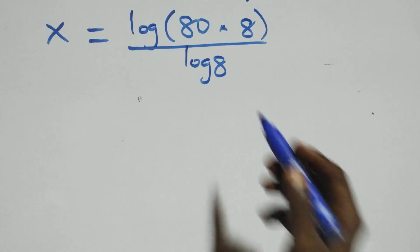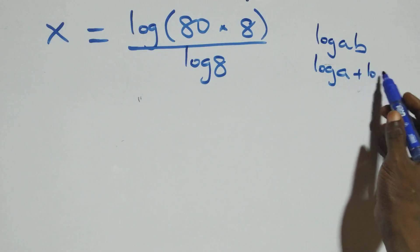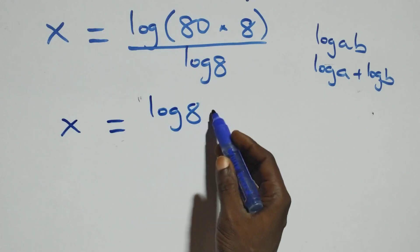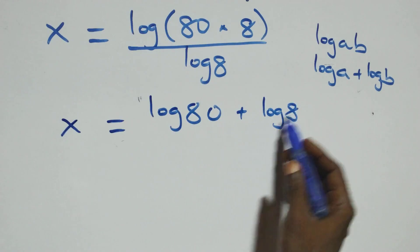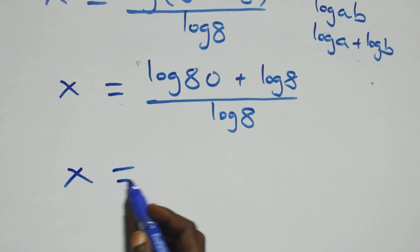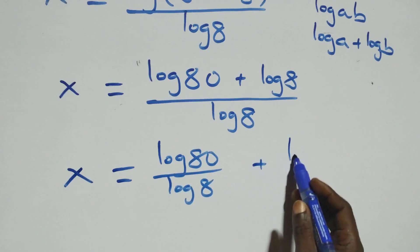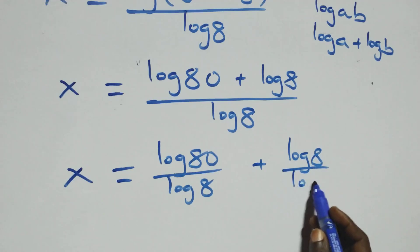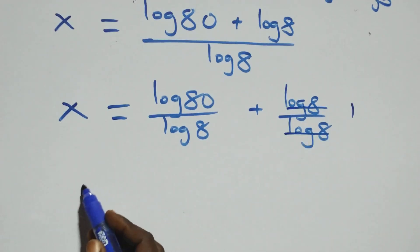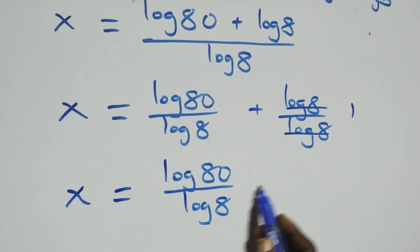Next, we apply the log product rule: log(a times b) is the same as log a plus log b. So we have x equals log 80 plus log 8, all over log 8. We then separate this into two fractions: x equals log 80 over log 8 plus log 8 over log 8. Log 8 over log 8 cancels to give 1, so x equals log 80 over log 8 plus 1.